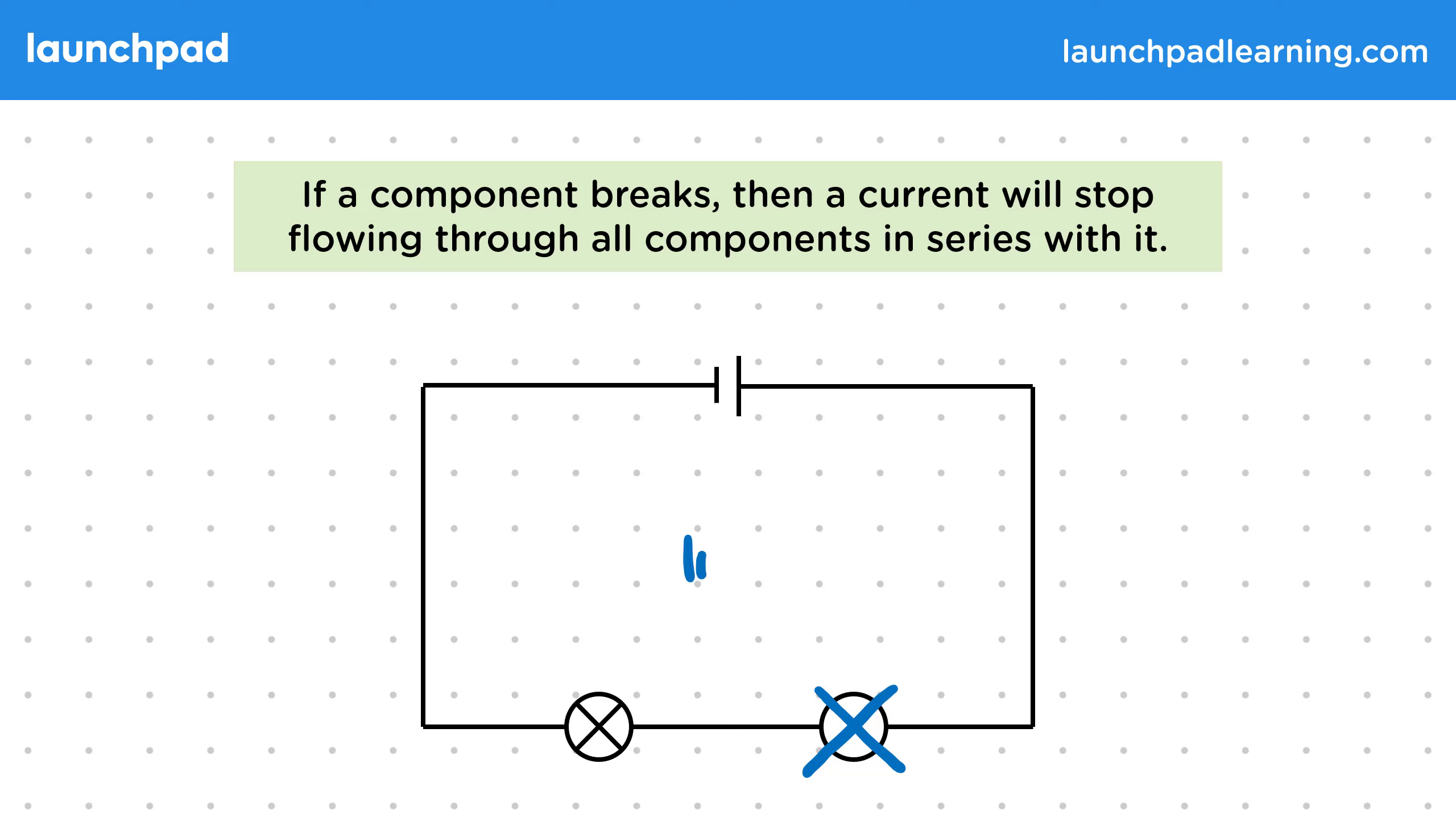Well it would mean the loop around the circuit is now broken. A current can't flow since all charge carriers would stop at the broken lamp. Meaning the other lamp also wouldn't light up.